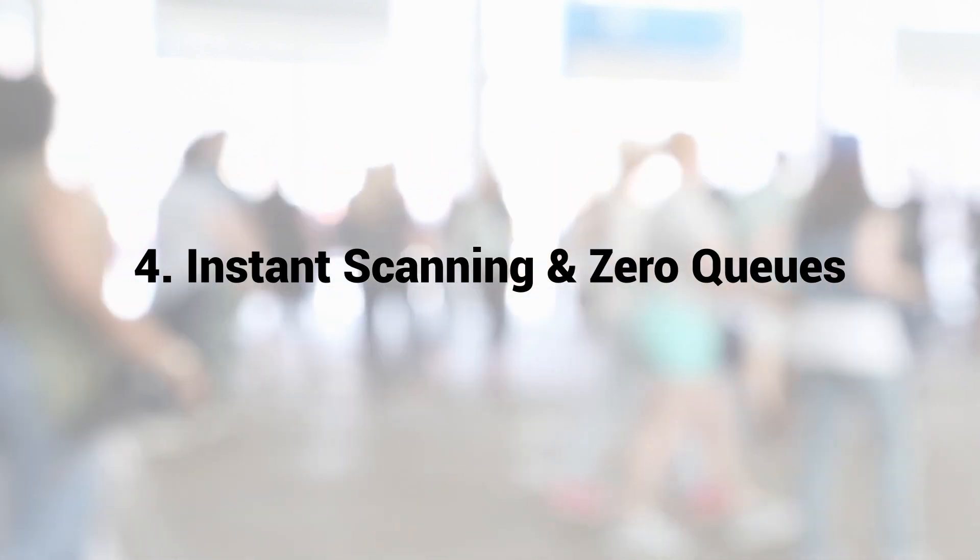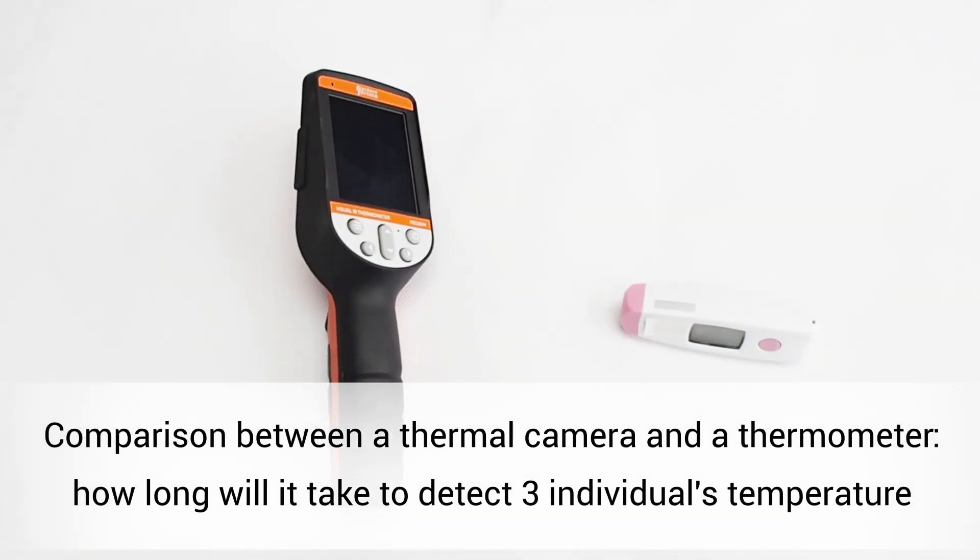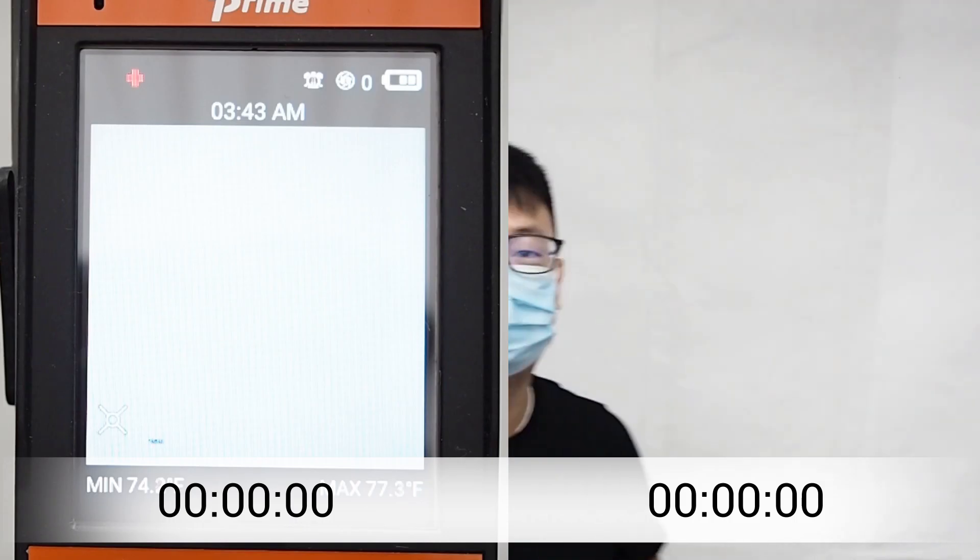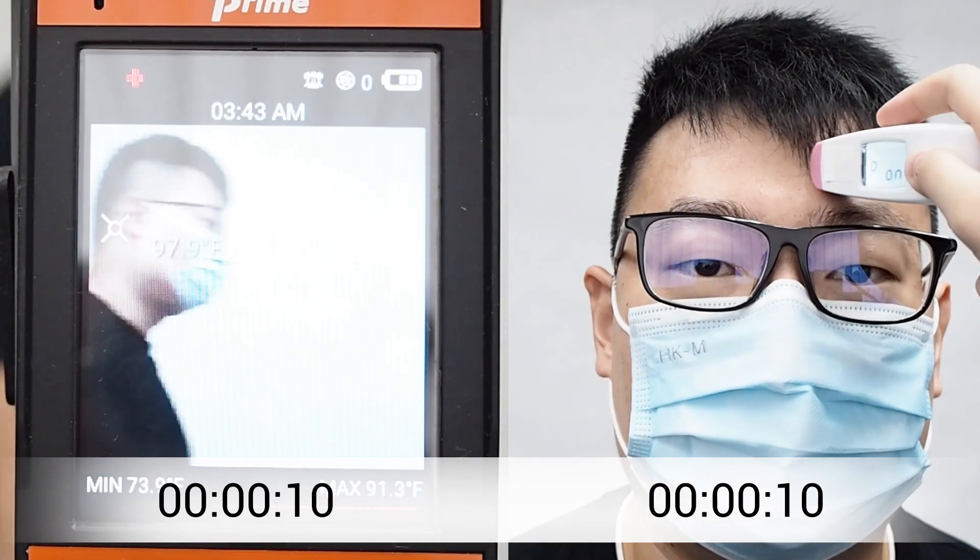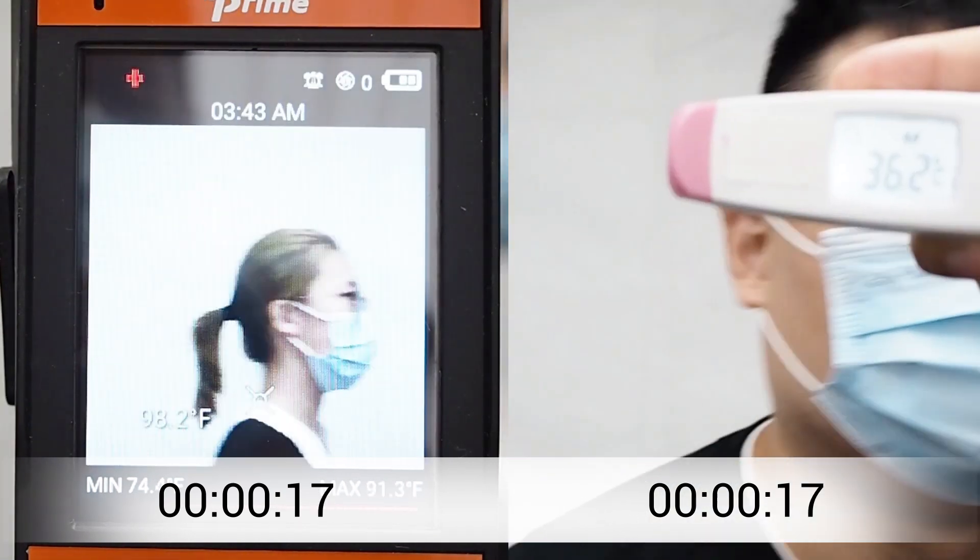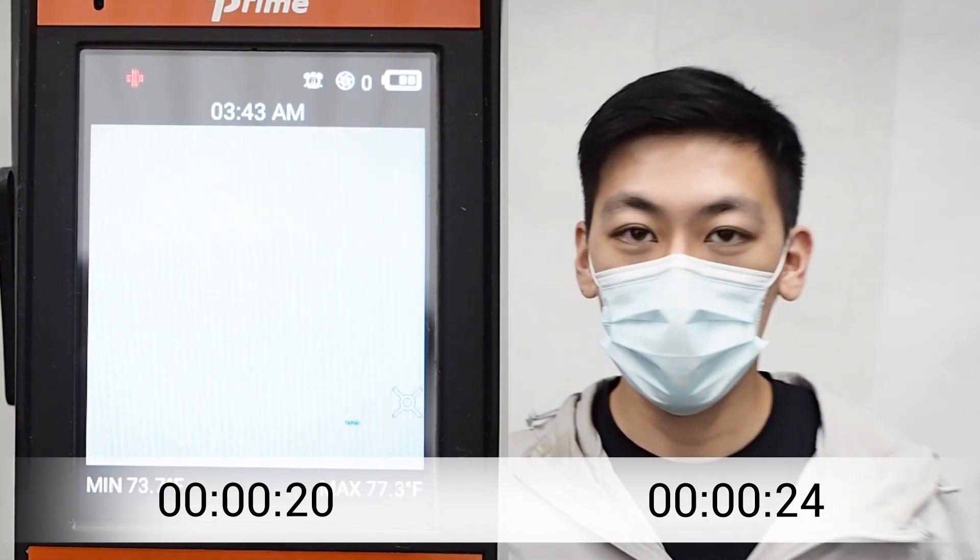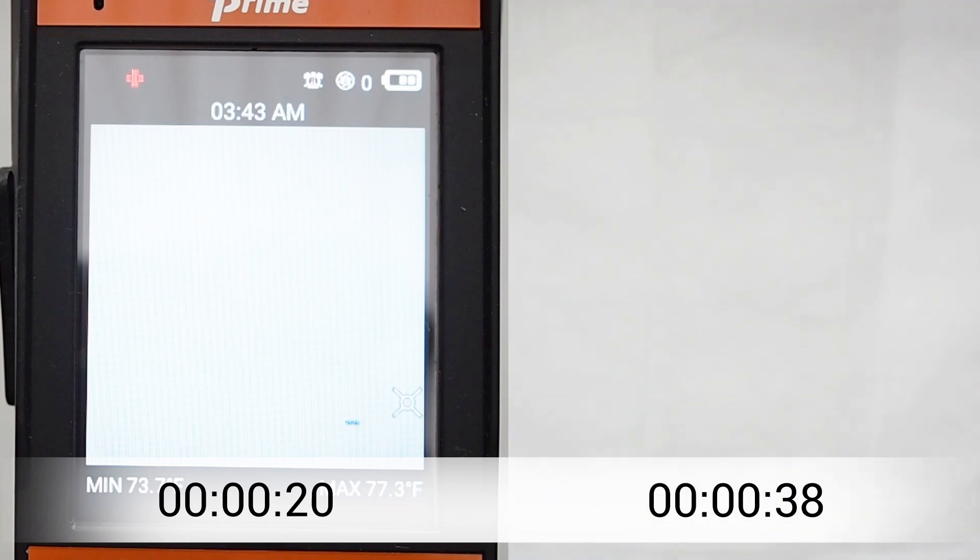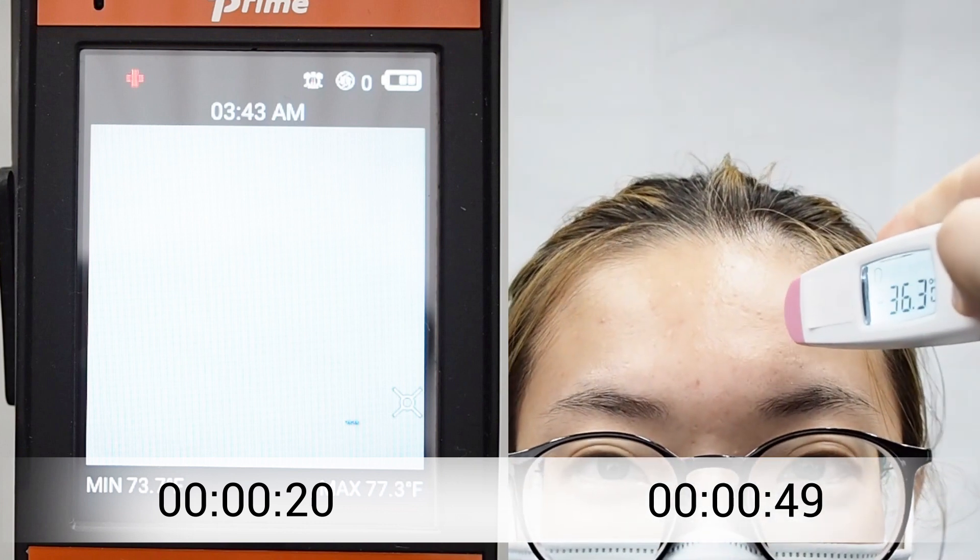Instant scanning and zero queues. With multiple sensors and active heat tracking, the IR0280H has clear advantages over traditional laser thermometer guns, which lack efficiency and will lead to queues forming. In comparison, a thermal camera can process individuals without the need for them to stop, allowing social distance to be maintained.